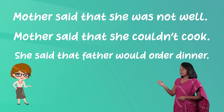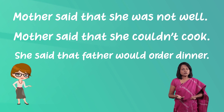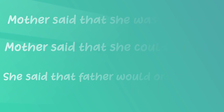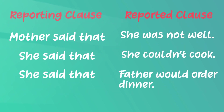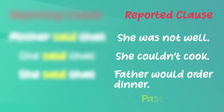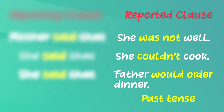Here is what Sittumini says: 'Mother said that she was not well. Mother said that she couldn't cook. She said that father would order dinner.' Now let's look at these three reported statements. They have two clauses: the reporting clause and the reported clause. The reporting clause has a past tense verb — 'mother said' or 'she said.' The reported clause also has a past tense verb — 'she wasn't well,' 'she couldn't cook,' 'father would order dinner.'